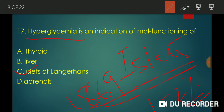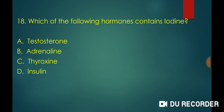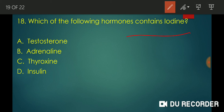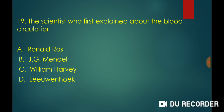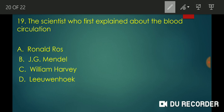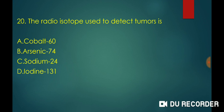Which hormone contains iodine? Iodine is present in thyroxine — that is the name of the hormone. The scientist who first explained blood circulation is William Harvey. William Harvey discovered blood circulation — this is a very important answer asked in many exams.